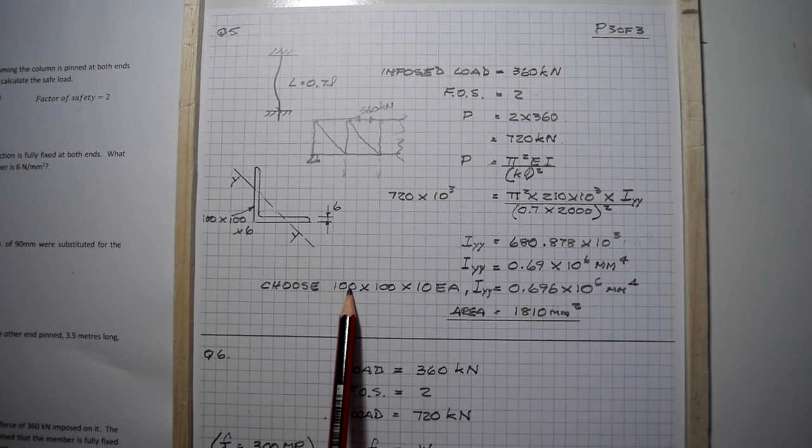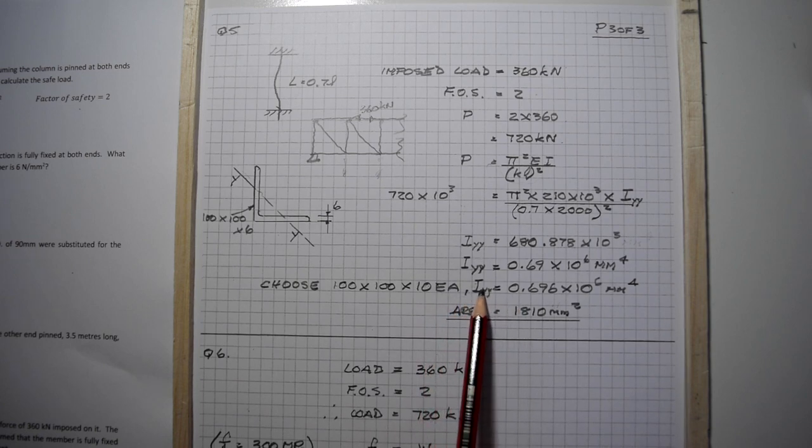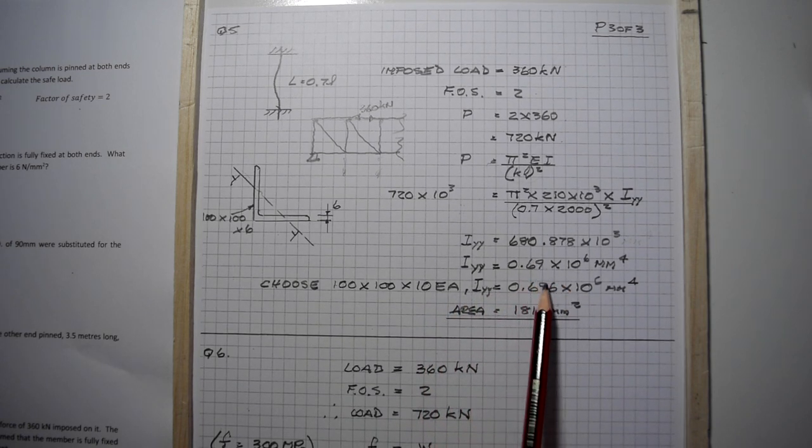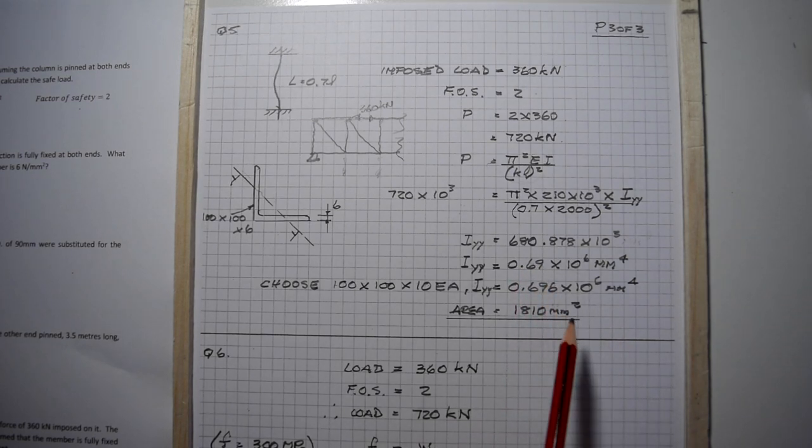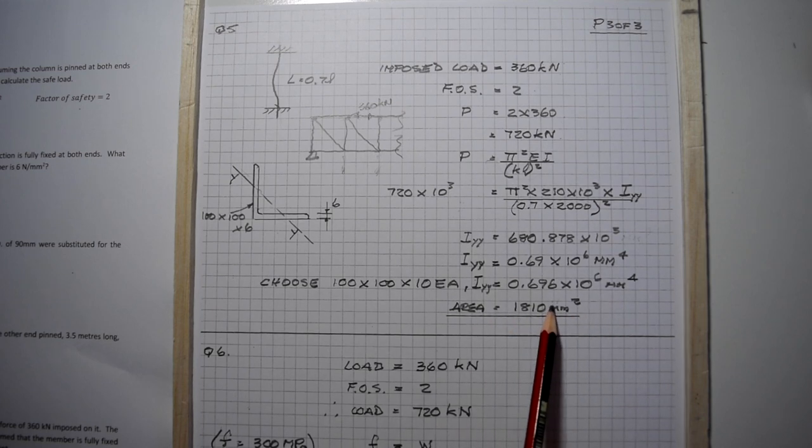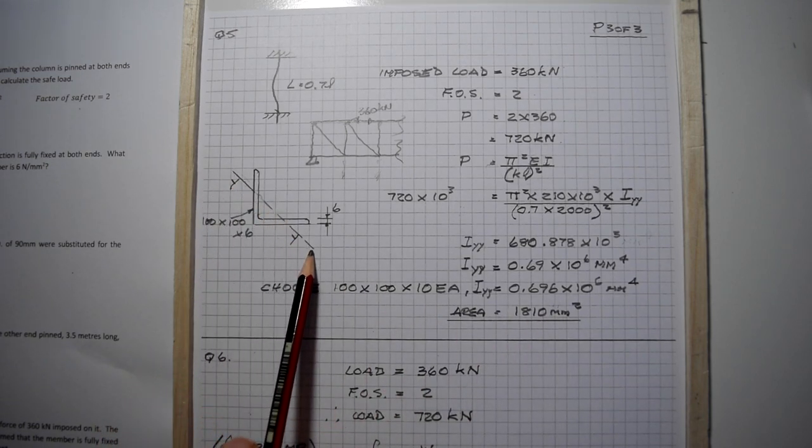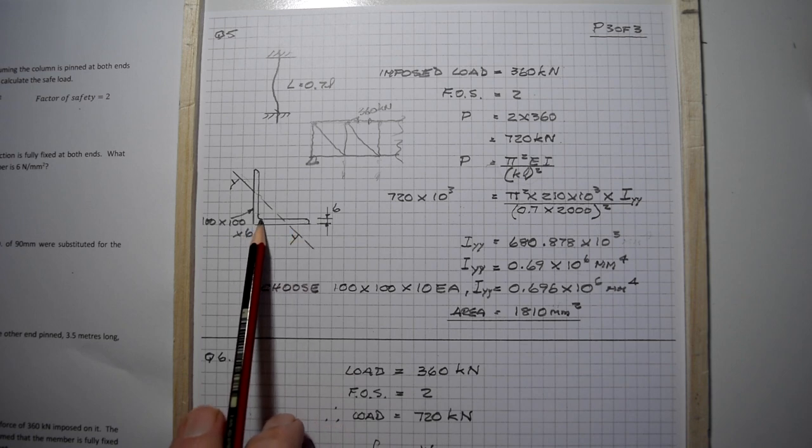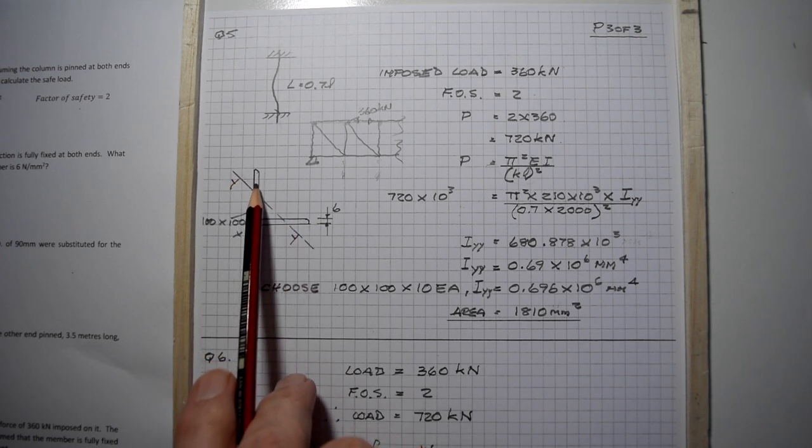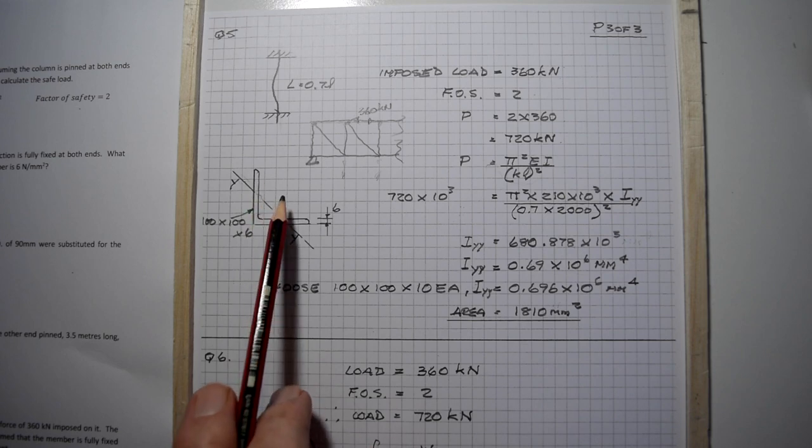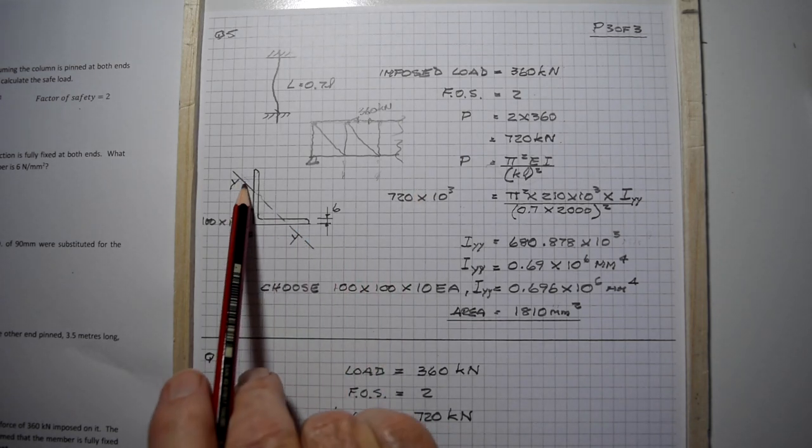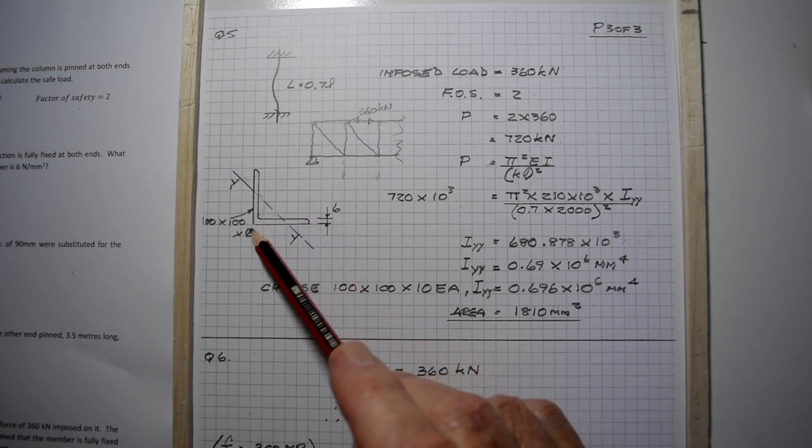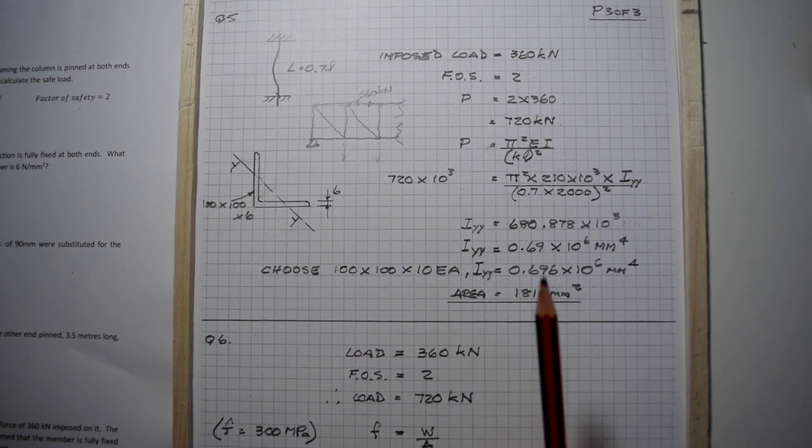From your tables, choose a 100 by 100 by 10 equal angle which has an I_yy of 0.696, very close to the required moment of inertia, with an area of 1810 square millimeters. This is the yy axis there. If you put this angle into compression it would buckle around that axis - the two legs would flatten out. That's why we take that axis not the x-axis.